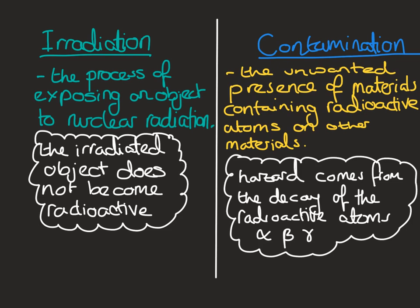With contamination, it's the unwanted presence of materials containing radioactive atoms on another material. So you can't get away from the radioactive materials because they are on you. The hazard comes from the decay of the radioactive atoms, and those decay particles can be alpha, beta, or gamma.